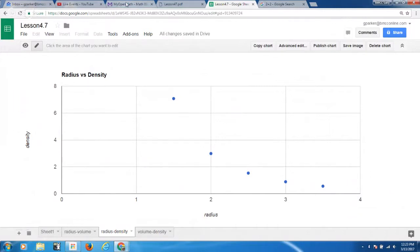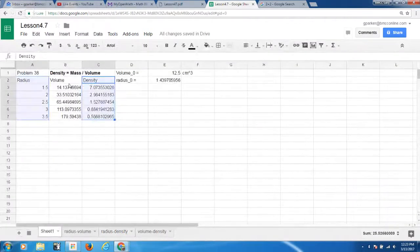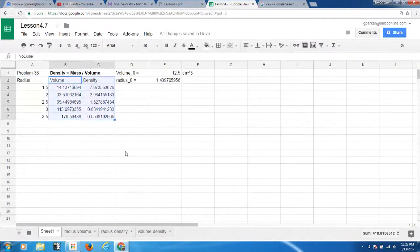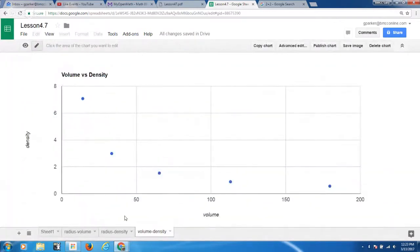The last graph I made was volume versus density, and that's right here. As the volume increases, we can see the density dropping. Notice it does not do so in a straight line. It's not exponential either. It's a different kind of function, a cube root function.